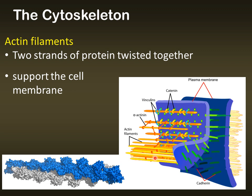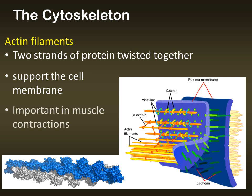Here in this picture, you can see how actin filaments are closely associated with the cell membranes, right up against those cell membranes. They are also very important in muscle contractions, as we'll see a little bit later — actin filaments are pulled together to contract a muscle cell.